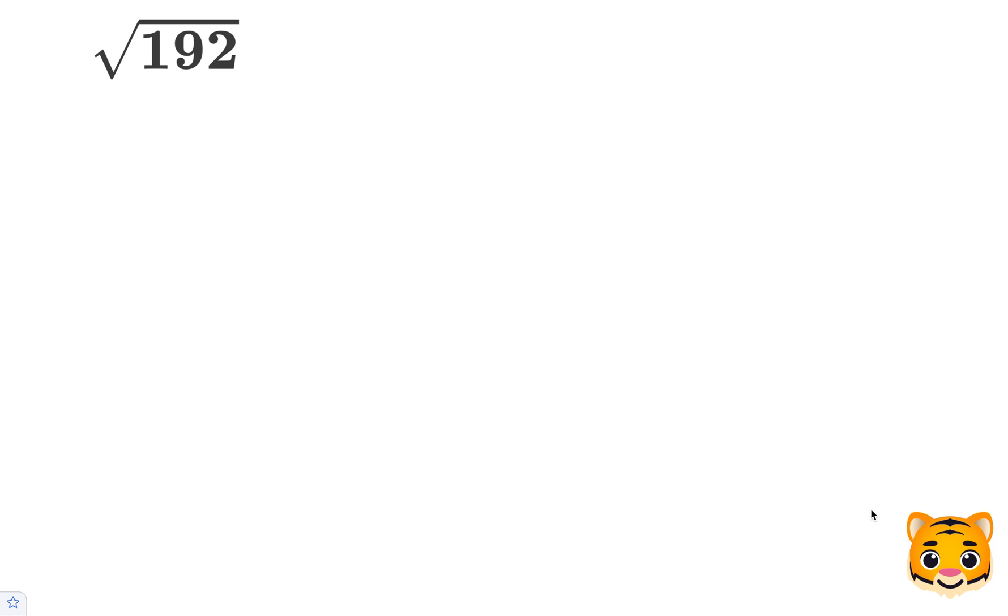In this example, we will be evaluating the square root of 192. To do this, we need to review an important math rule where the square root of a times b is equal to the square root of a times the square root of b.